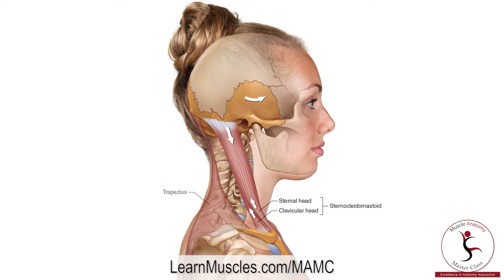The sternocleidomastoid has two heads: a sternal head and a clavicular head. The sternal head attaches onto the manubrium of the sternum, and the clavicular head attaches onto the medial one-third of the clavicle.